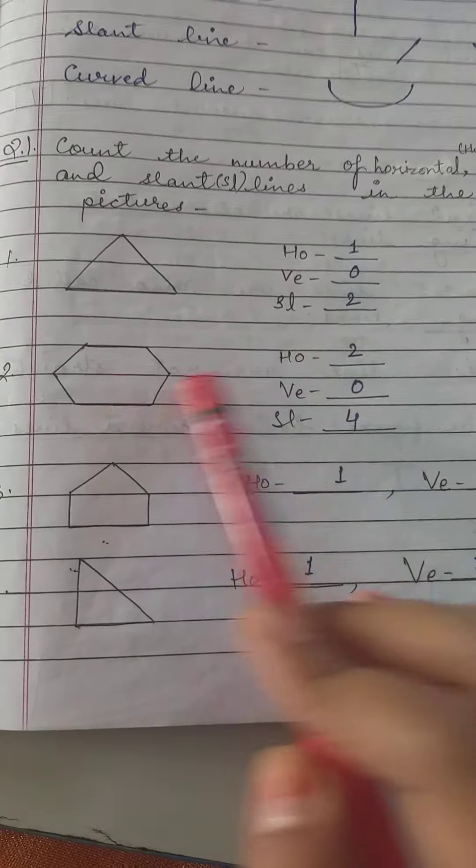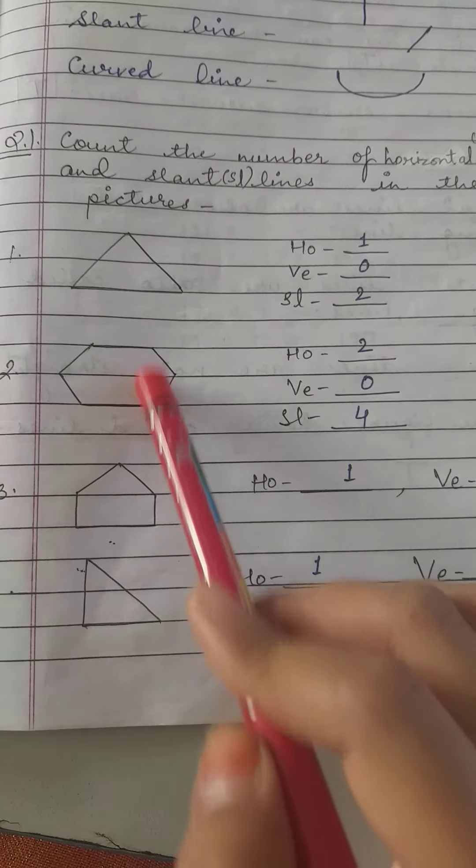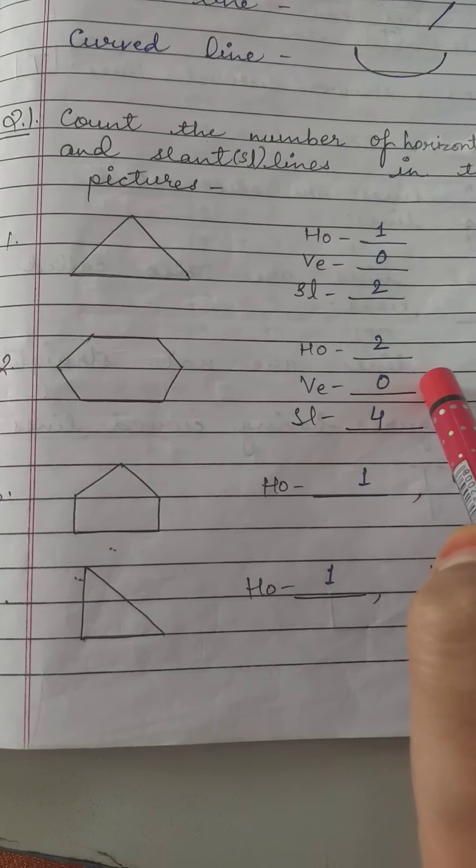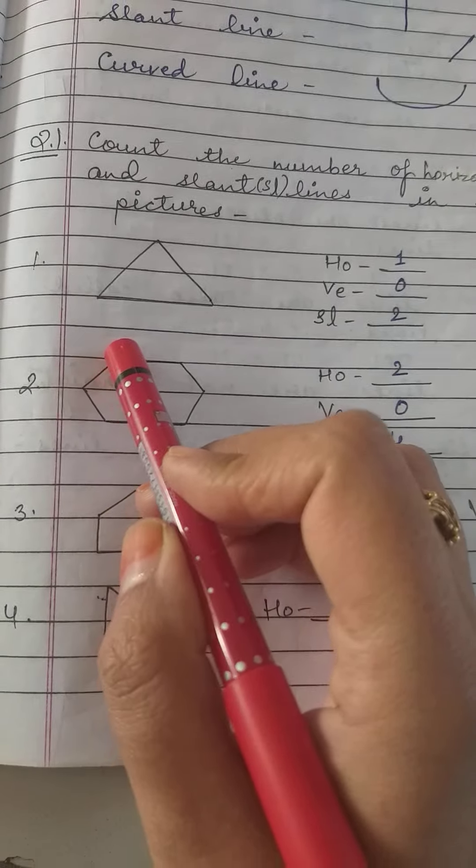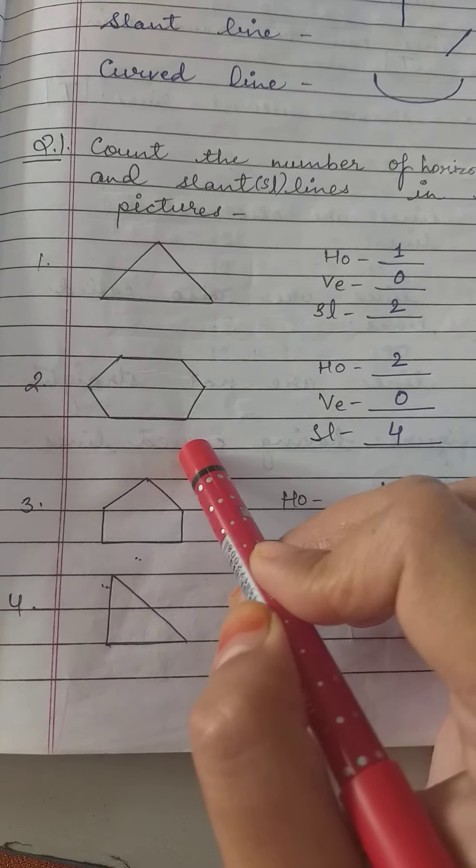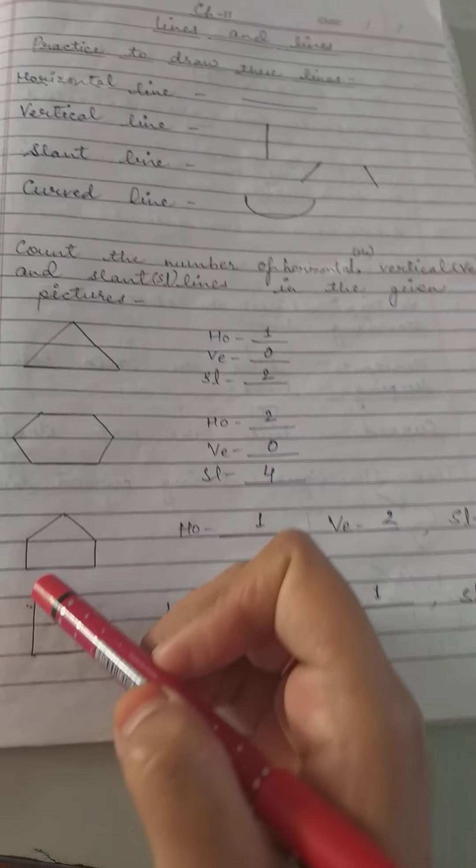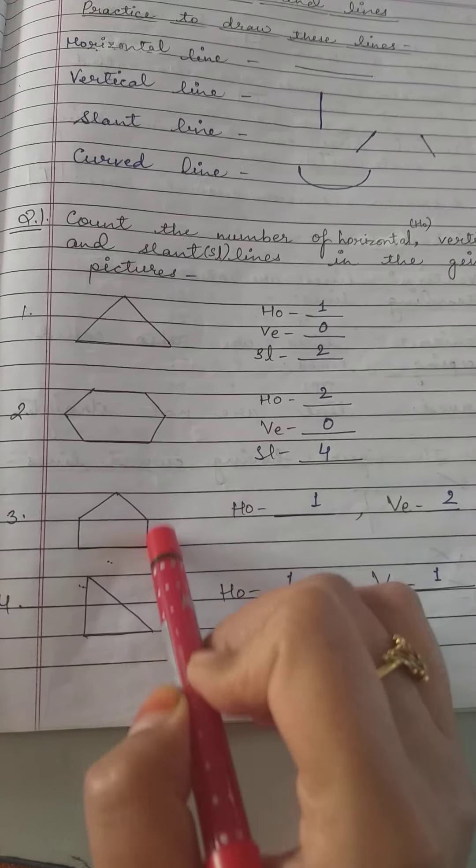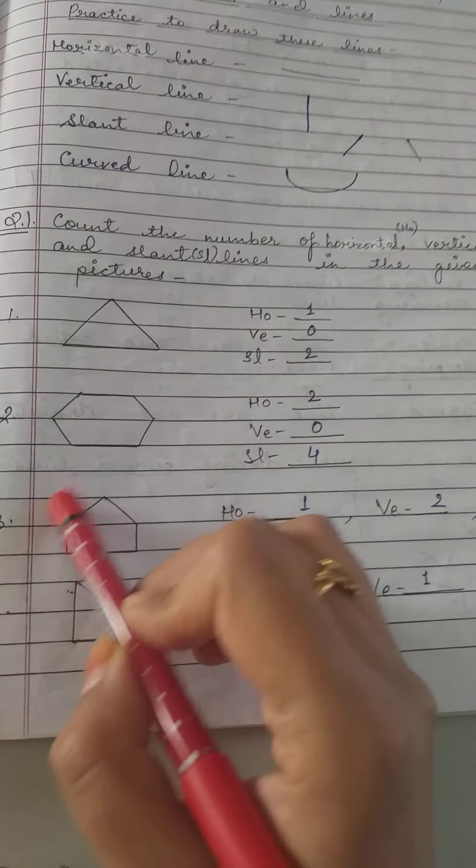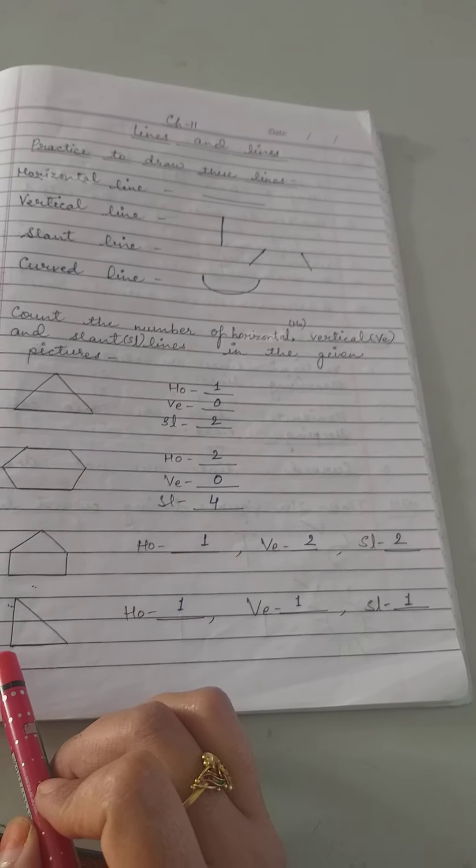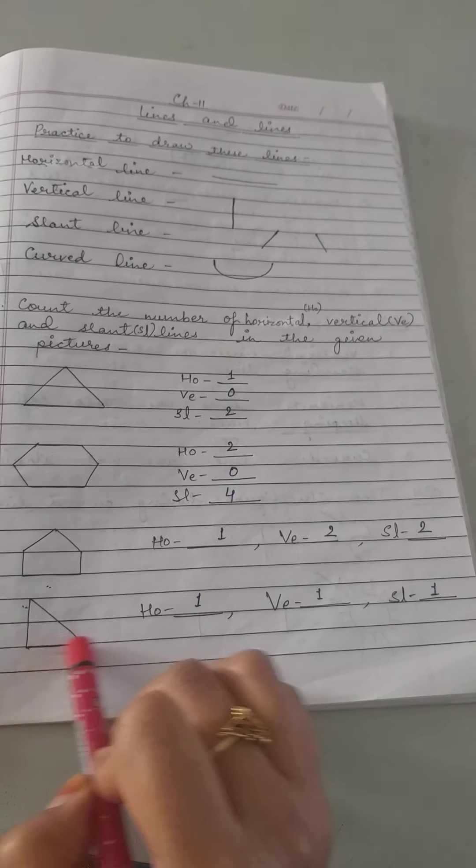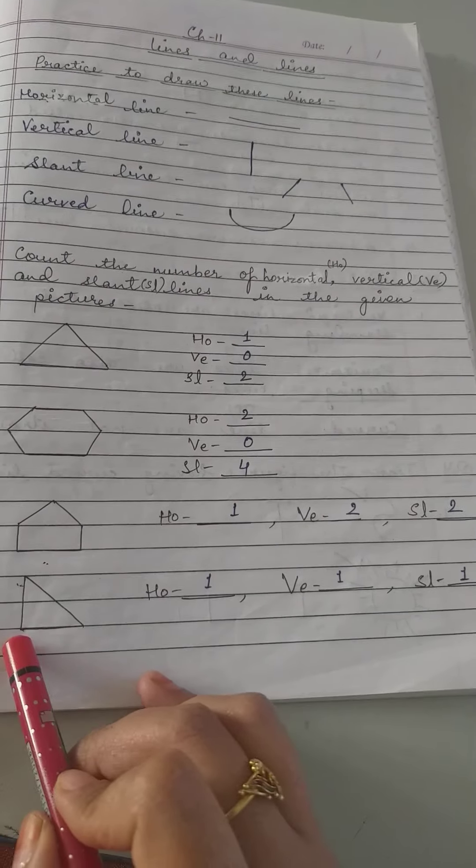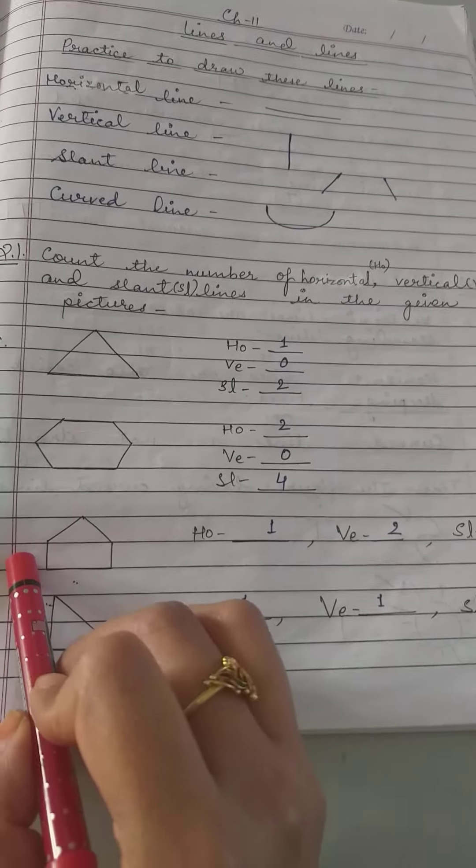In the hexagon: two horizontal lines, vertical line is zero, slant lines 1, 2, 3, 4 - that's 4. Now in this figure, one horizontal line, two standing lines (that is vertical lines), and two slant lines. Then in this triangle: one horizontal line, one vertical line, and one slanting line.